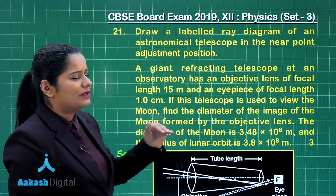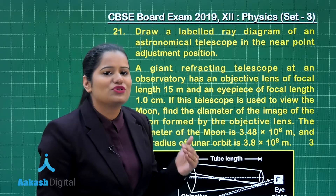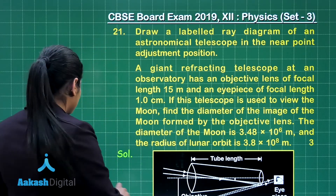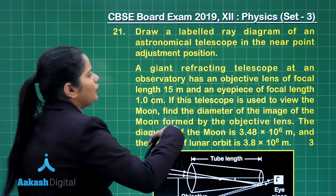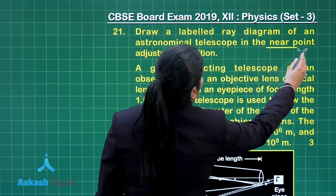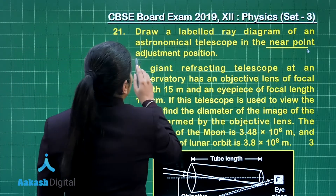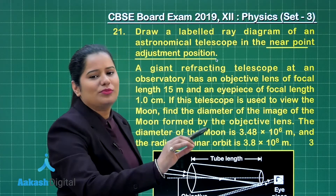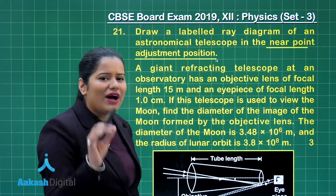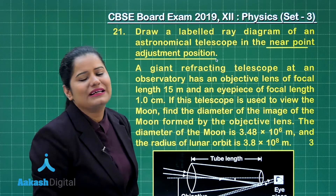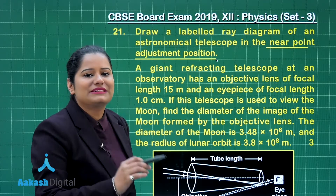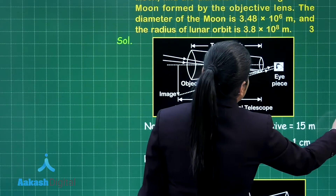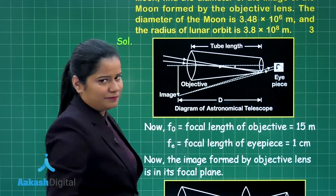To draw the labeled diagram of an astronomical telescope, you need to see that you need to draw it for which position. We need to draw it for near point adjustment position, and in that case always remember that the final image will be formed at the distance of distinct vision — it will be formed at the least distance of distinct vision.